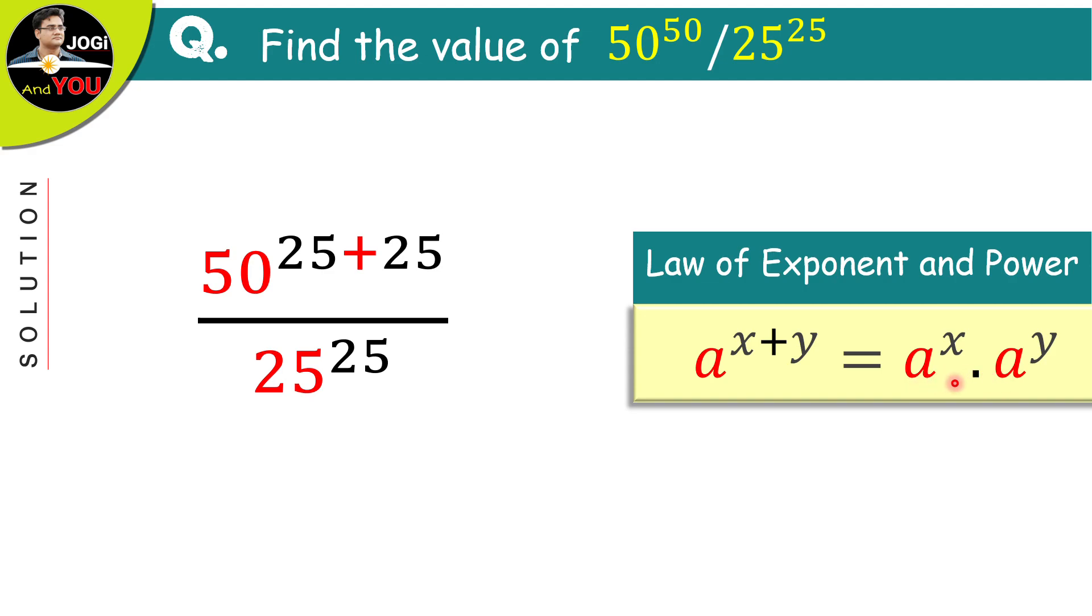So, I can rewrite this here as a product of two powers of the same base. Just like this. This is belonging to the law of exponent and powers. So, that's what it is going to look like: 50 to the power of 25 times 50 also raised to the power of 25.